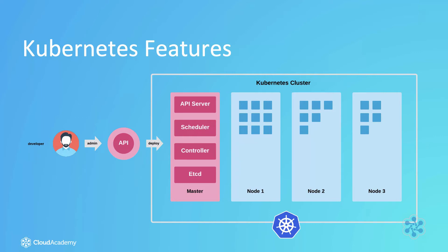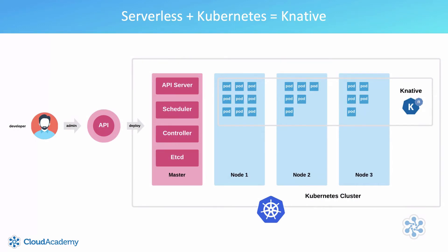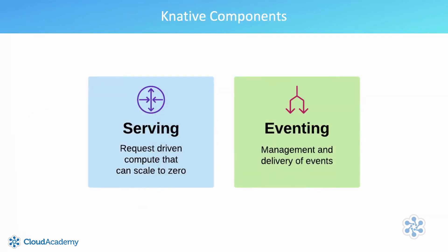What Kubernetes doesn't set out to address specifically is serverless and event-driven architectures, but it can provide some of the required building blocks to enable serverless deployments. Enter Knative. Knative is a serverless event-driven framework deployed directly into Kubernetes, enabling Kubernetes to support serverless event-driven deployments. With Knative installed, your cluster can support not only long-running microservice-based workloads, but also event-driven and short-lived scale-to-zero serverless workloads. Knative combines many existing native Kubernetes operations into a set of higher-level primitives, helping developers be more productive and self-sufficient.